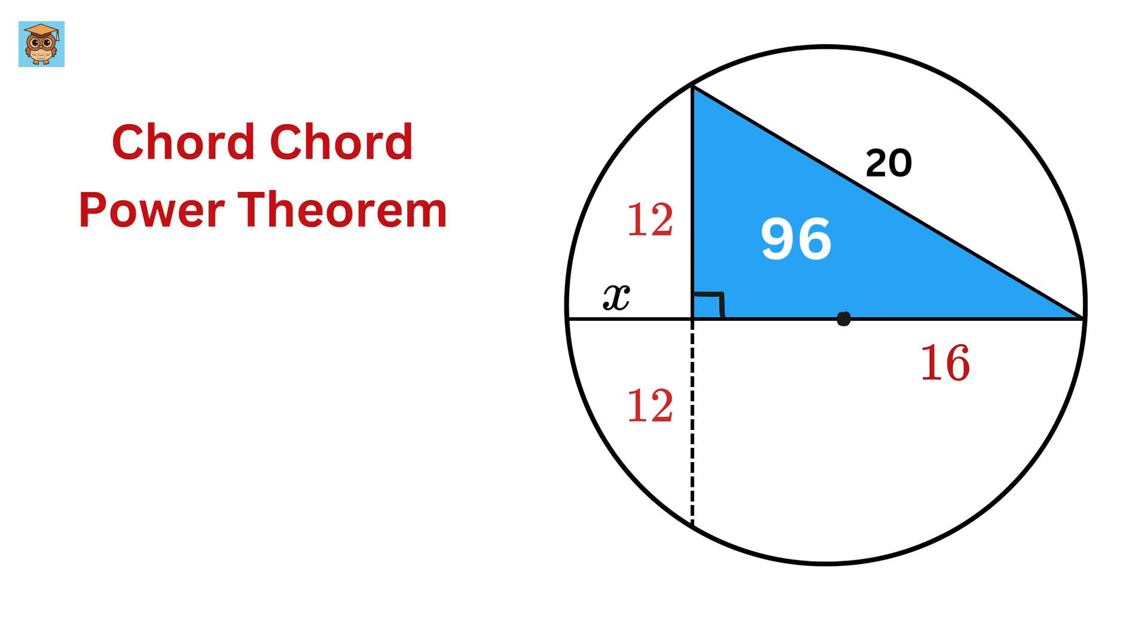We can now use the chord-chord power theorem here. Imagine two lines crossing inside a circle, making four pieces. The theorem says that if you multiply the lengths of the two parts of one line, it will equal the same kind of multiplication for the other line.